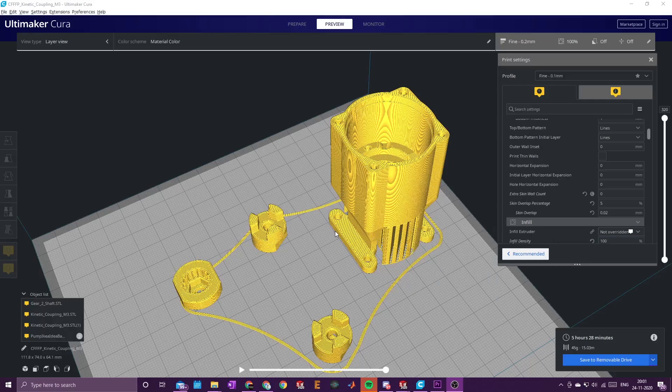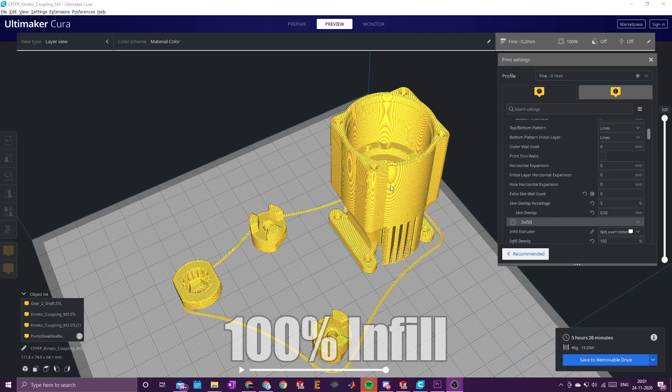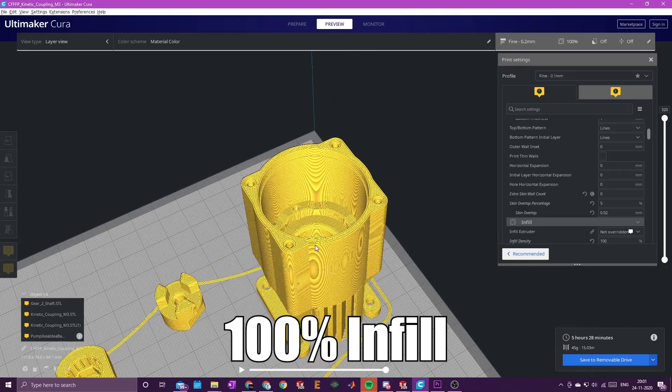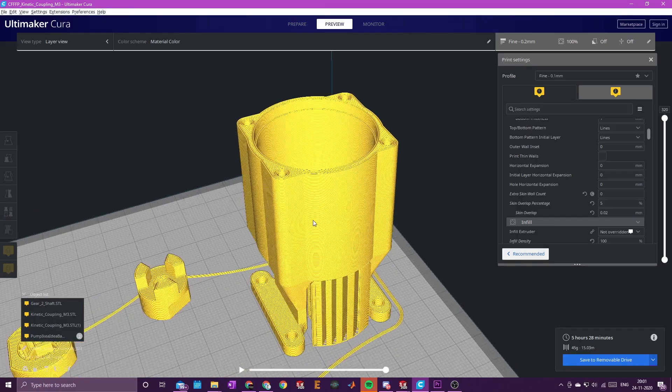So the motor add-on has four 3D printed parts: the main housing, two couplings, and the gear-to-shaft coupling. All parts should be printed in 100% infill.